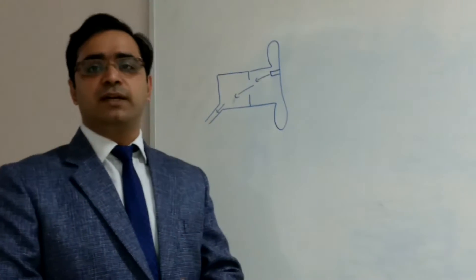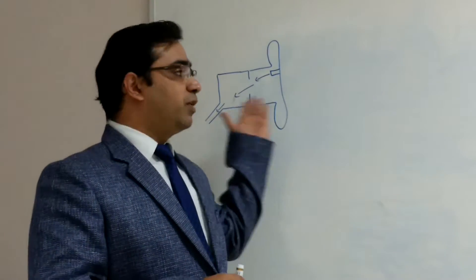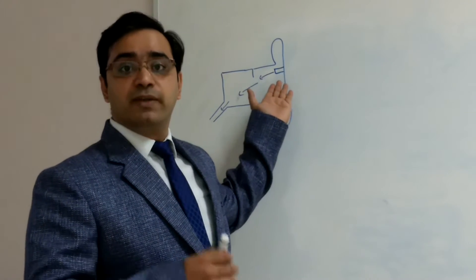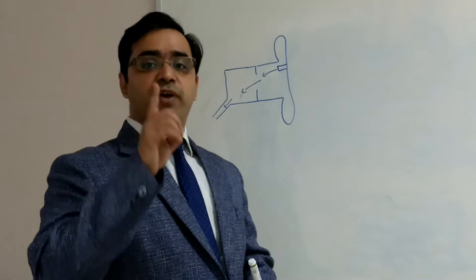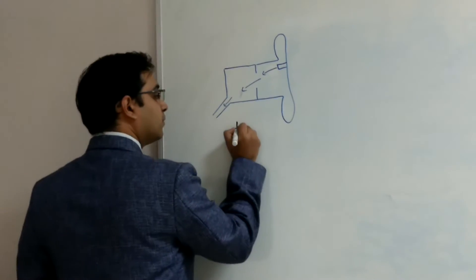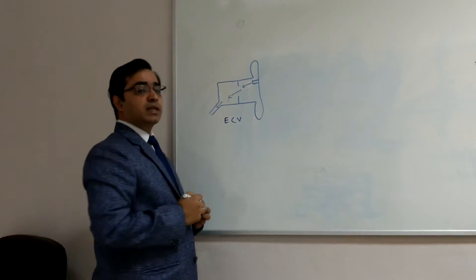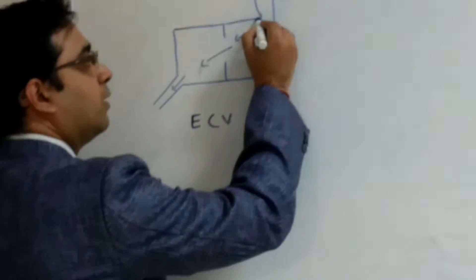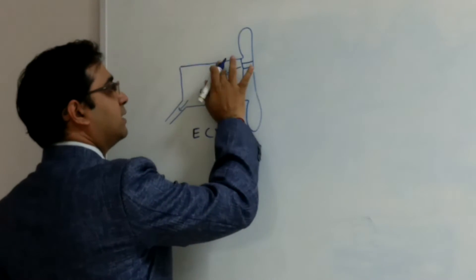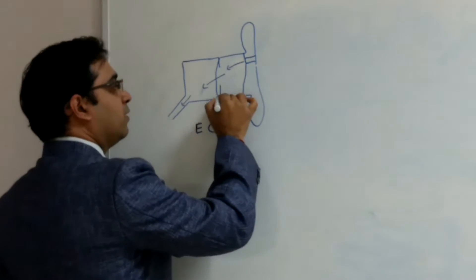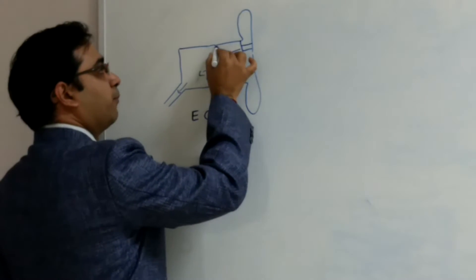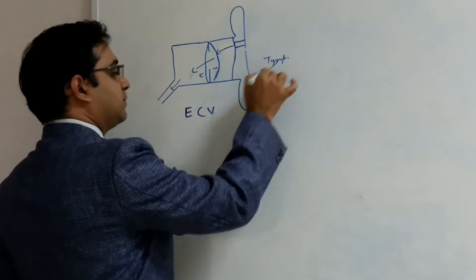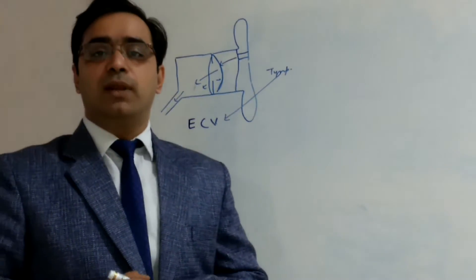So how do we differentiate whether the flat tympanogram is because of perforation or because of a loose probe? The very important thing is ECV — external canal wall volume. External canal wall volume: the probe is fitted, pressure is exerted, the tympanic membrane will go inside and come out, and measuring this, the tympanometer gives us the external canal wall volume.